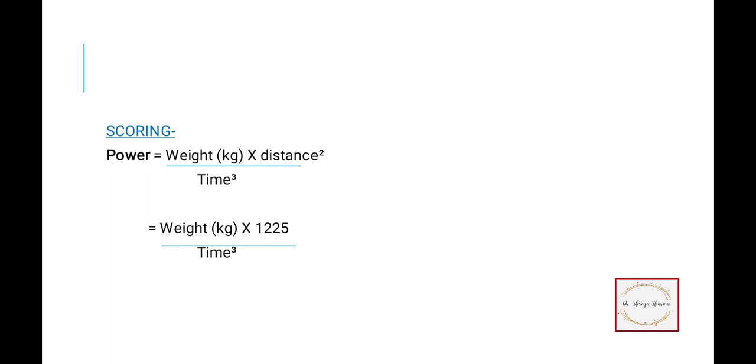For scoring, power is weight times distance upon time cubed. Distance is 35 meters, and it will be six sprints, so distance squared is 1225. Note weight and time to the nearest second cubed, then you will get peak anaerobic power.